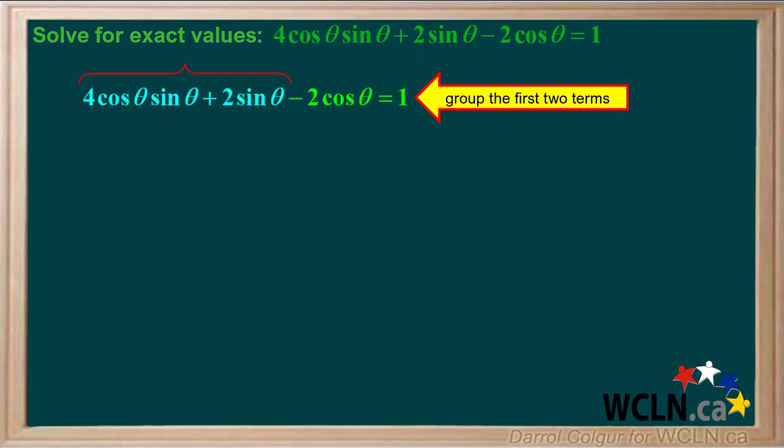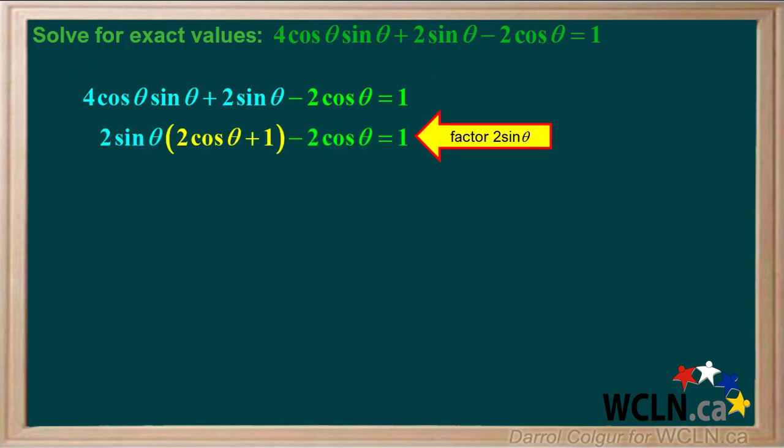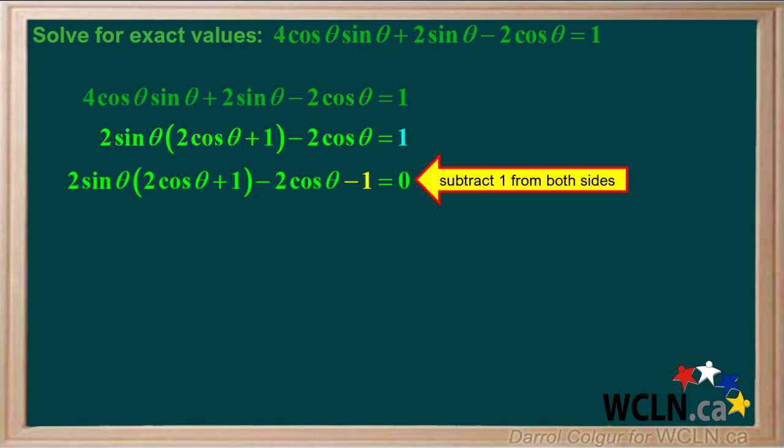If we group the first two terms, we can factor 2 sine theta from both terms. This gives us this equation. Subtracting 1 from both sides gives us this equation.